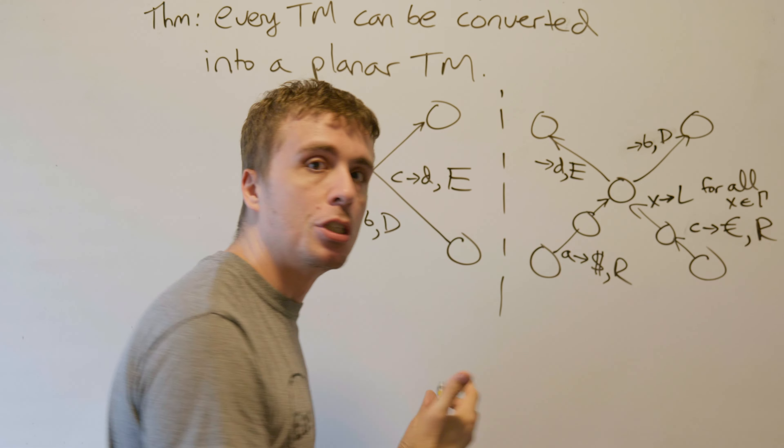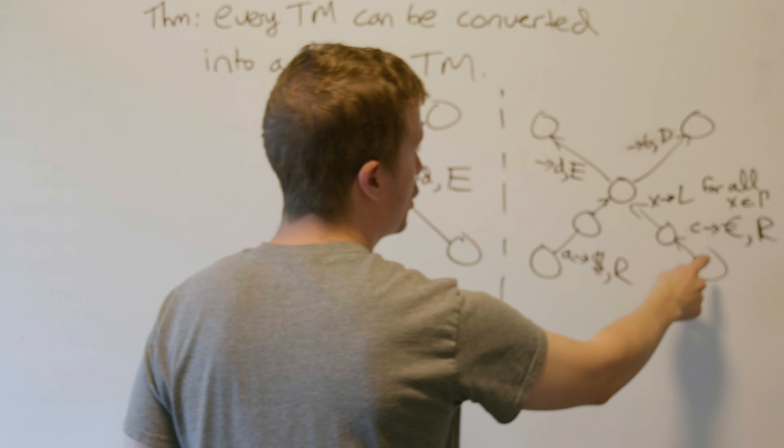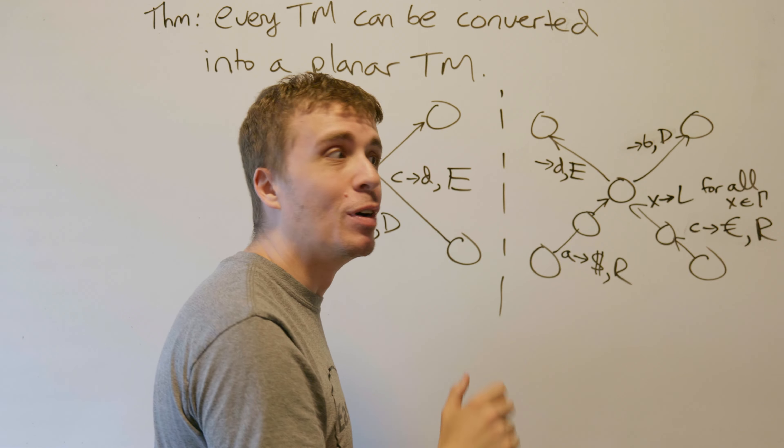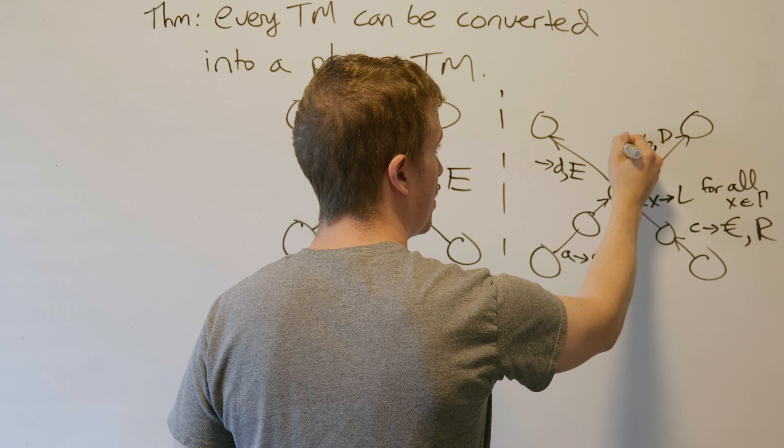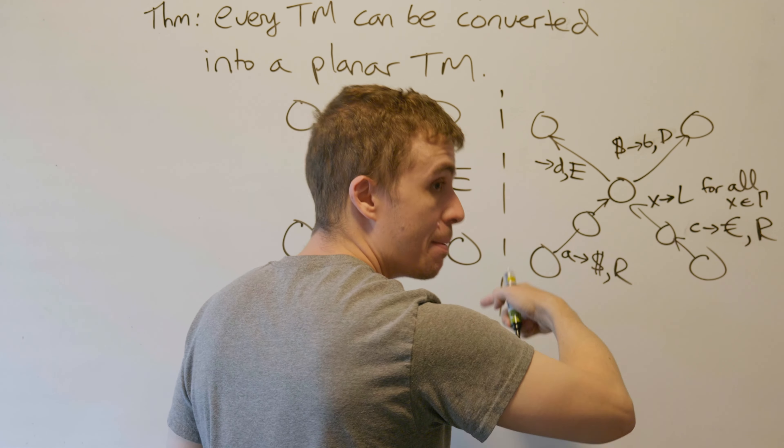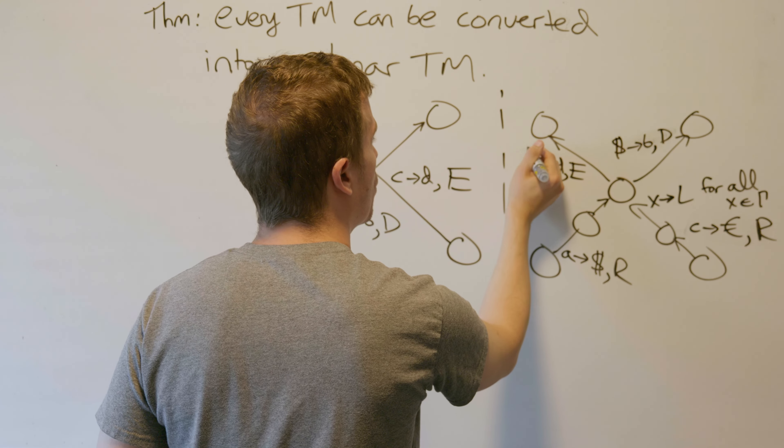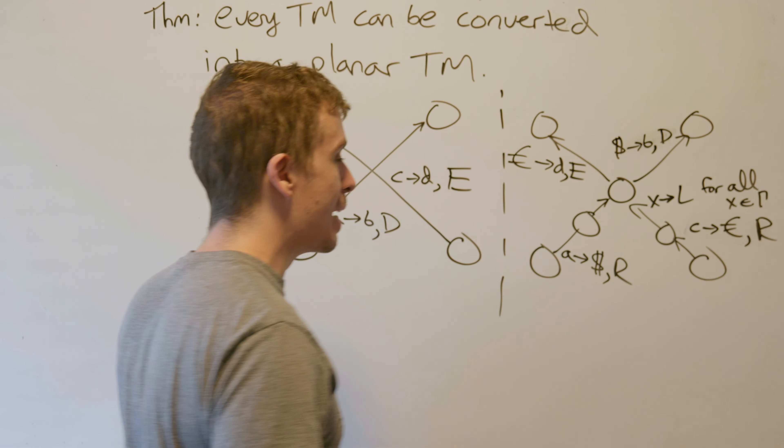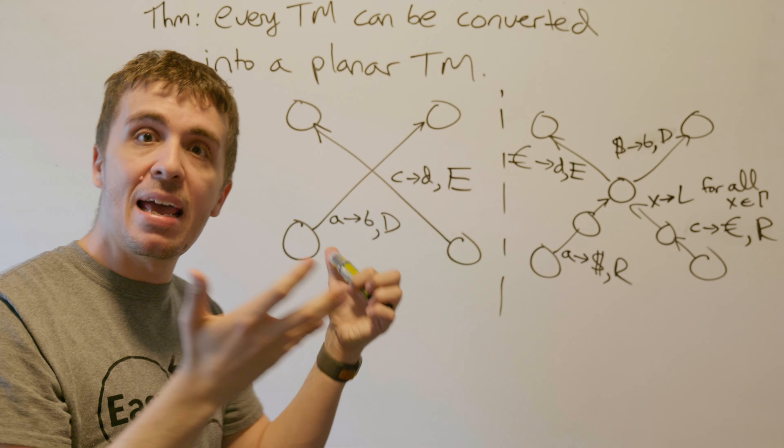How do we deal with these transitions in terms of what they read? It's whatever we wrote there originally. This one was a dollar sign, so this one will be dollar sign. And of course, this one will be euro. We have eliminated that edge crossing.